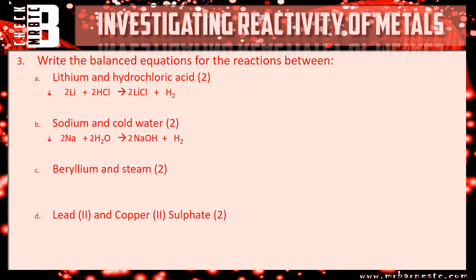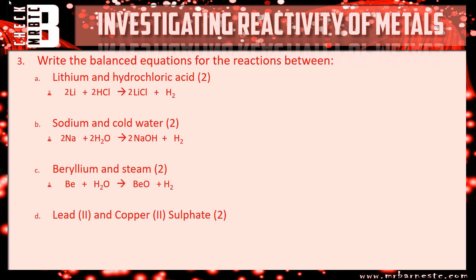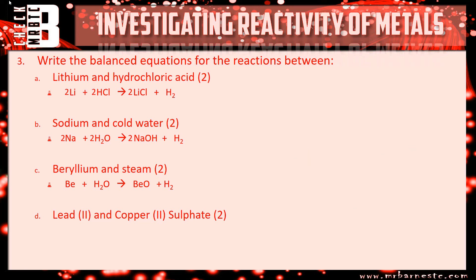Beryllium and steam: beryllium is in group two, Be²⁺; oxygen is in group six, O²⁻; so the charges cancel out giving Be + H₂O → BeO + H₂. Finally, lead and copper sulfate: lead is Pb²⁺ and copper is Cu²⁺, and sulfate is SO₄²⁻. Since all charges are 2+ and 2−, the formula is simply CuSO₄, giving Pb + CuSO₄ → PbSO₄ + Cu. One mark for the left-hand side and one for the right.